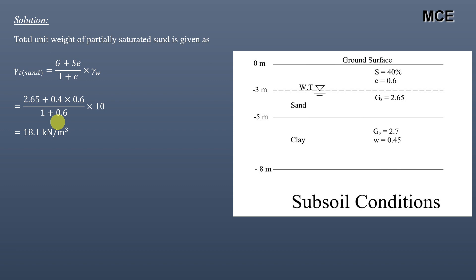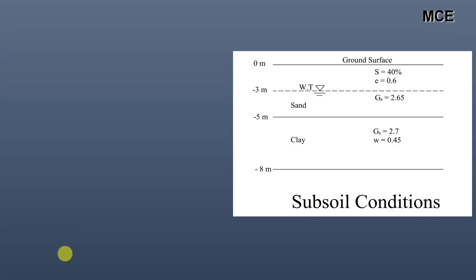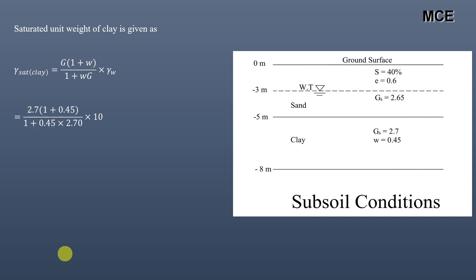The saturated unit weight of sand is given by γsat = (G + e) / (1 + e) × γw, which gives 20.3 kN/m³. For the saturated clay, G = 2.7 and water content w = 0.45, giving a saturated unit weight of clay of 17.67 kN/m³.